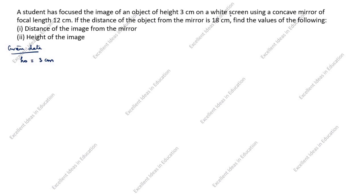On a white screen using a concave mirror of focal length 12 centimeter, so f is equal to minus 12 centimeter. For a concave mirror, the focal length is always negative. The distance of the object from the mirror is 18 centimeter. Object distance u is always negative for lenses and mirrors, so u is equal to minus 18 centimeter.